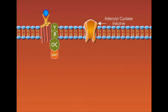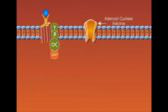When a ligand, either an internal molecule or a drug, binds to the extracellular domain of these receptors, it activates it. As a result of this activation, a GTP molecule replaces the GDP molecule bound to the alpha subunit.